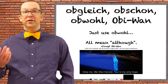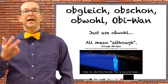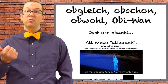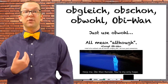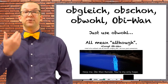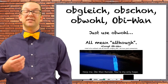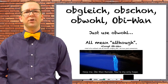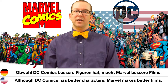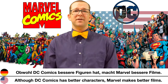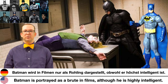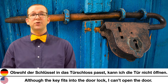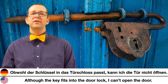Ob is also used at the beginning of other conjunctions: ob gleich, ob schon, and ob wohl. Most German learners will only be familiar with ob wohl, as ob gleich and ob schon aren't as widely used. I recommend you simply learn ob wohl and keep in the back of your mind that ob gleich and ob schon are archaic ways of saying the same thing. All of them just mean 'although.' Examples: 'Obwohl DC Comics bessere Figuren hat, macht Marvel bessere Filme.' — Although DC Comics has better characters, Marvel makes better films. 'Batman wird in Filmen nur als Rohling dargestellt, obwohl er höchst intelligent ist.' — Batman is portrayed only as a brute in films, although he is highly intelligent.